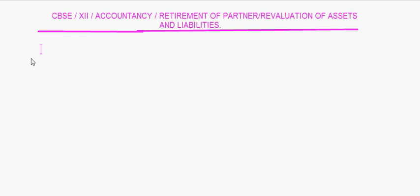Today I'm going to take up revaluation of assets and liabilities in the lesson on retirement of partners. Just like what you have done in admission of partners, whenever a partner retires there can be certain revaluation in the value of assets and liabilities. In many questions they ask for the journal entries, so it's important that you know the journal entries for all this revaluation and transfer of profit.